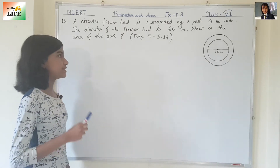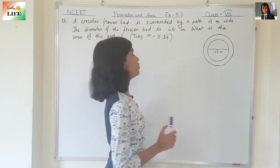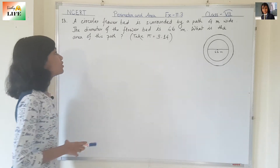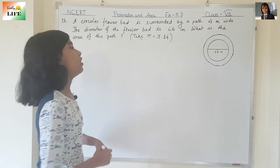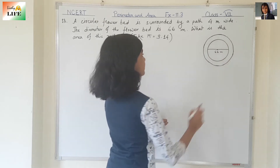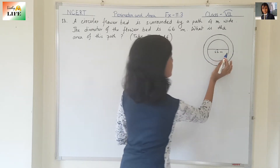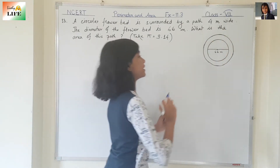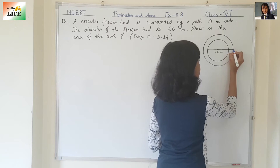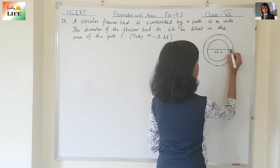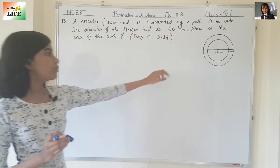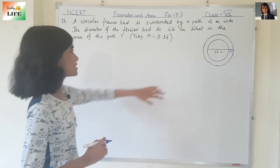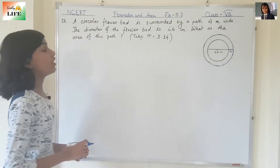A circular flower bed is surrounded by a path 4 meter wide. The diameter of the flower bed is 66 meter. What is the area of this path? You can see this is the circular flower bed whose diameter is 66 meter, and it is surrounded by a path which is 4 meter wide.